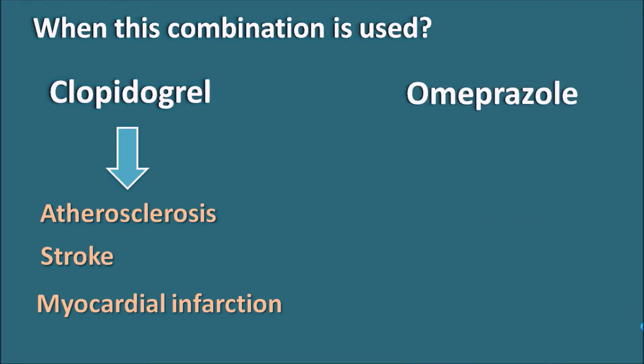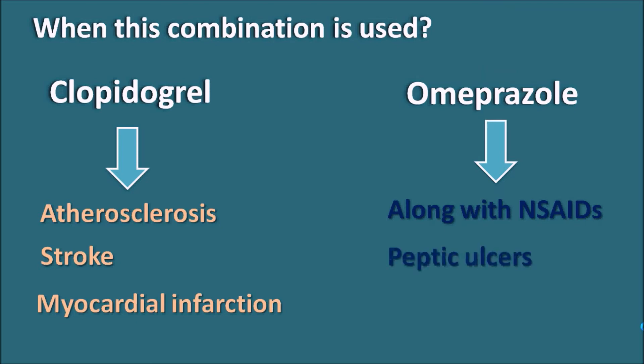Similarly, omeprazole can be given in various situations — it can be given along with antacids to control gastric acid. It can also be used in the treatment of peptic ulcers, and it can be given in conditions like gastric acidity and gastric ulcers. Wherever gastric acid levels are excessively increased, omeprazole can be given.